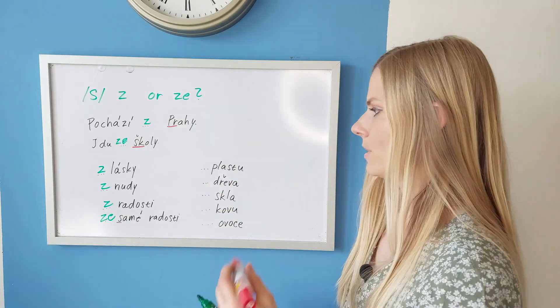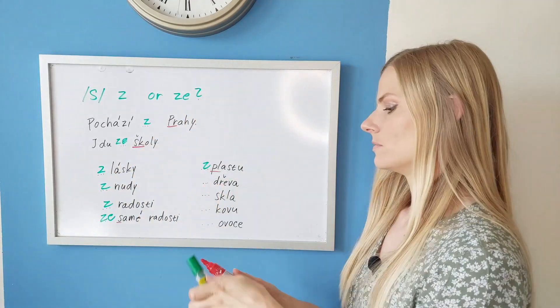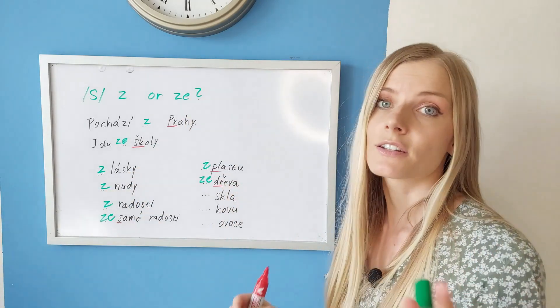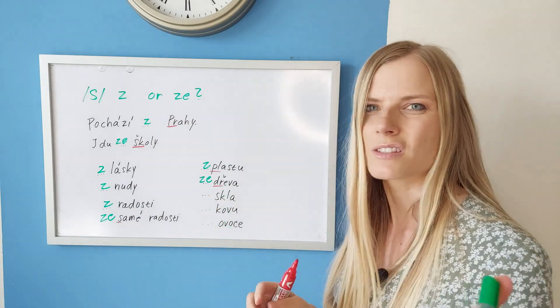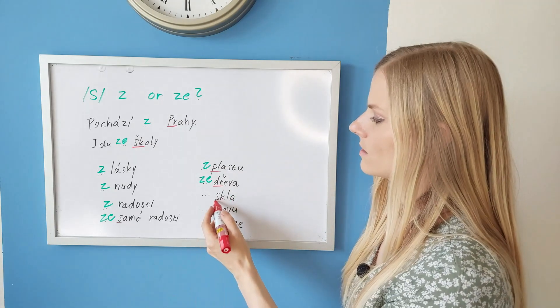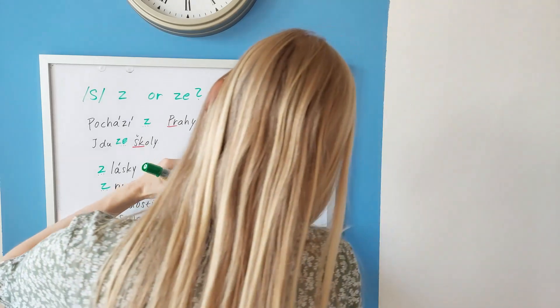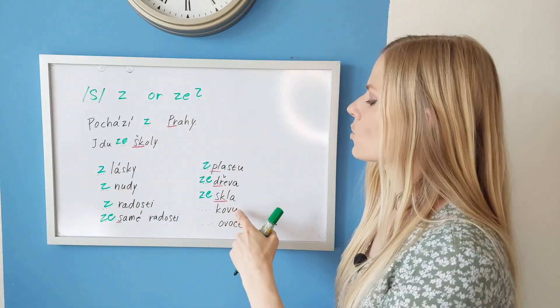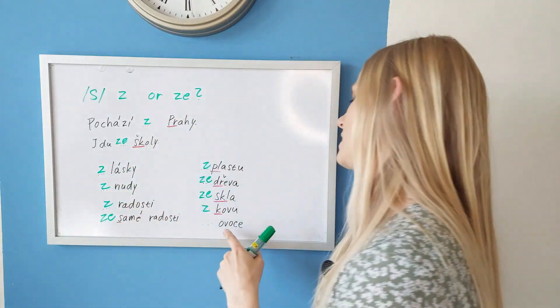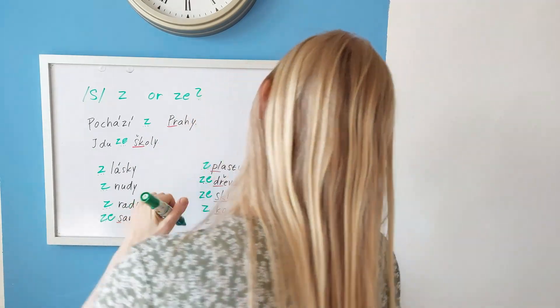Z plastu - out of plastic. Pl - two consonants, but one of them is L, semi vowel, so it is z plastu. Ze dřeva - D and ř, two consonants, so we put ze. Ř is not one of these semi vowels, so we are entitled to say ze dřeva. Ze skla - out of glass. S, K, L. There is an L, but there are still two consonants, so we say ze skla. Z kovu - metal, there's just one consonant, so we say z kovu. And the last one, fruit - z ovoce. There's a vowel O, that doesn't make it complicated.